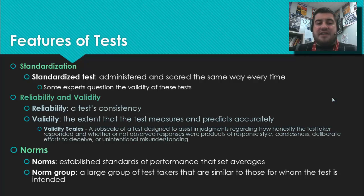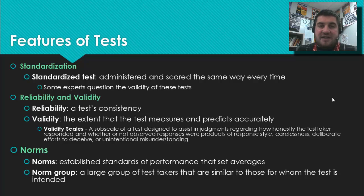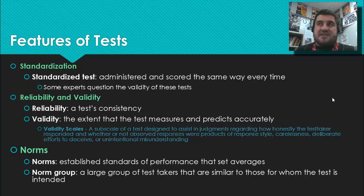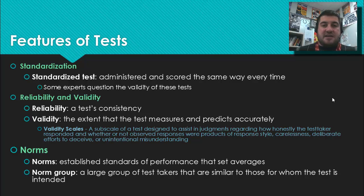We've already talked about reliability and validity. Reliability is how consistent test results are. Validity is whether the test measures and predicts accurately what it is supposed to measure and predict. Tests usually have validity scales — subscales with questions designed to tell if the test taker is telling the truth, whether they're presenting themselves favorably, misunderstanding questions, or trying to deceive.